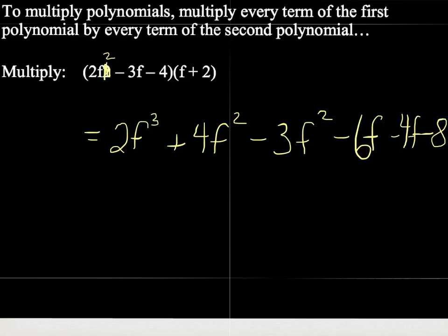Okay, welcome back. Here's our expression so far. So I took 2f squared times f plus 2. That gave me 2f cubed plus 4f squared. Then I took minus 3f and multiplied it by f plus 2, and that gave me minus 3f squared minus 6f. Then I took minus 4 and multiplied it by f plus 2, and that gave me minus 4f minus 8.